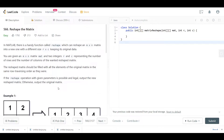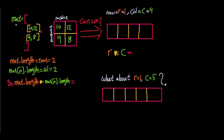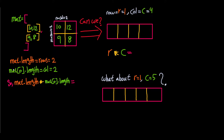On the blackboard, I have drawn a matrix called mat holding values 10, 12, 9, and 8. I want to try reshaping it as one row and four columns, and also as one row and five columns. mat.length represents the number of rows — we have two. mat[0].length represents the number of columns — we have two. So the total number of elements is two times two, which equals four.